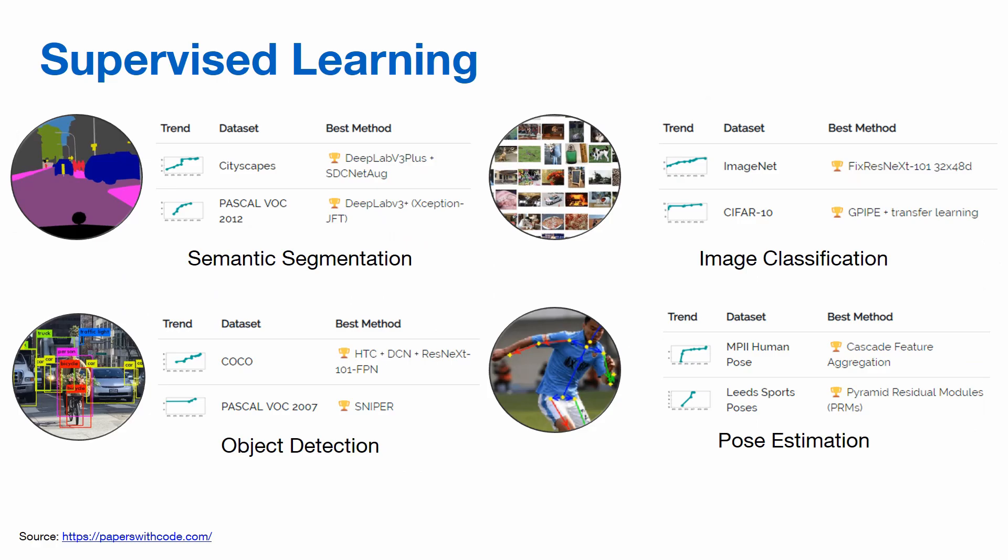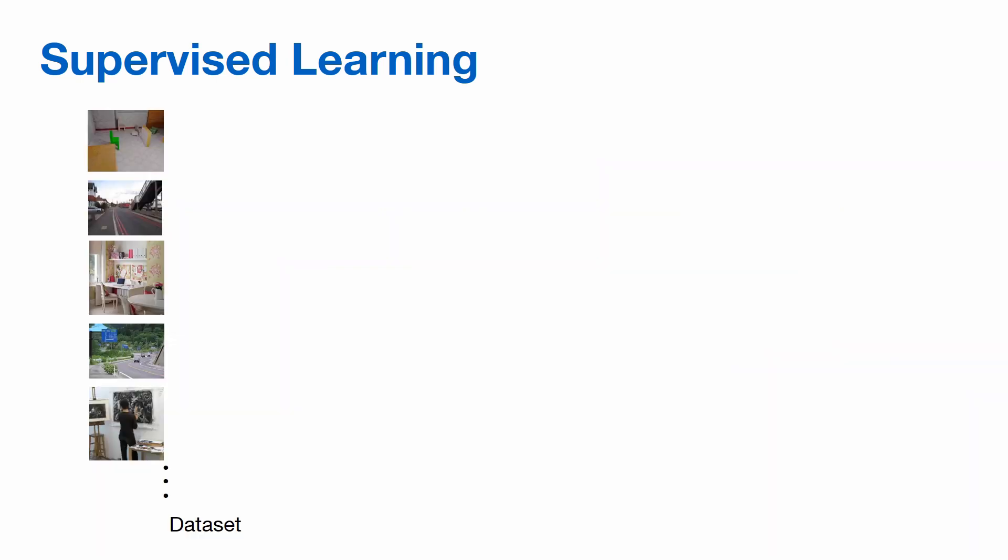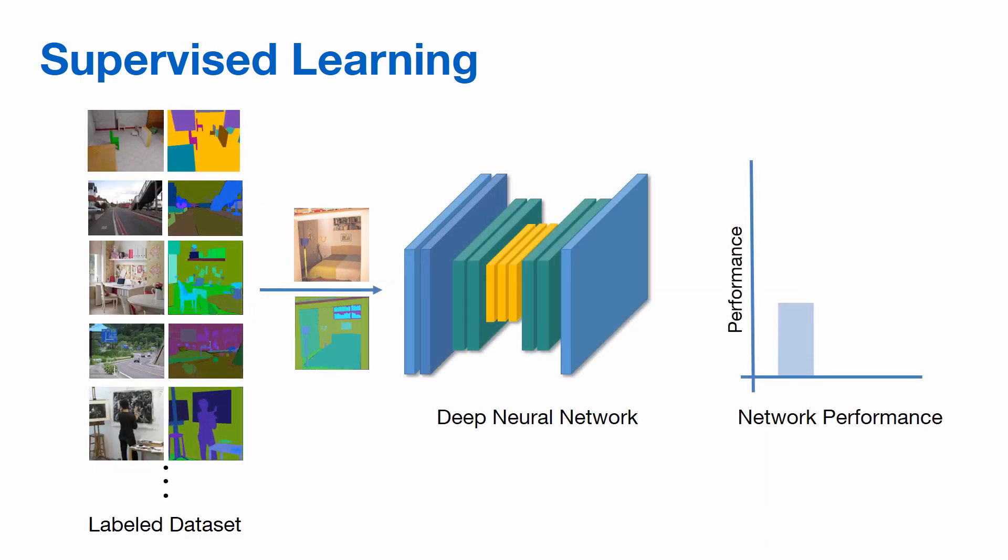Supervised learning methods have achieved state-of-the-art performance across a number of computer vision problems. Supervised learning uses ground-truth correspondences to train a model which attains a certain performance.